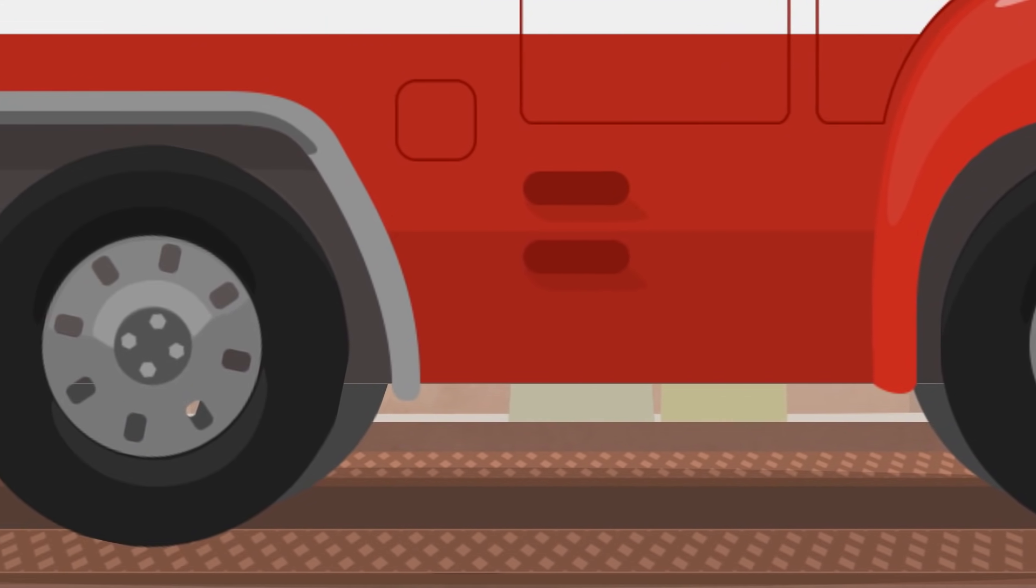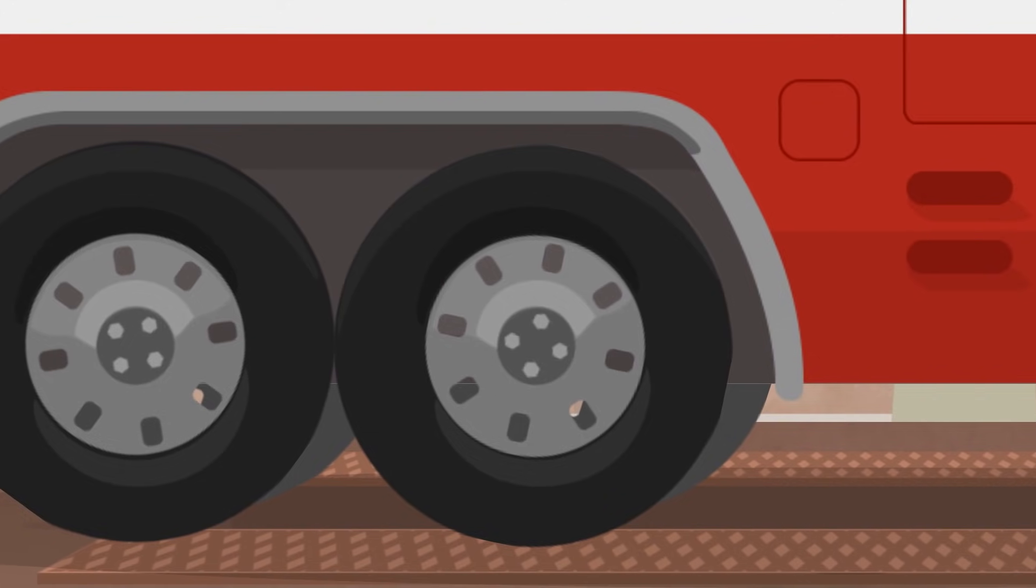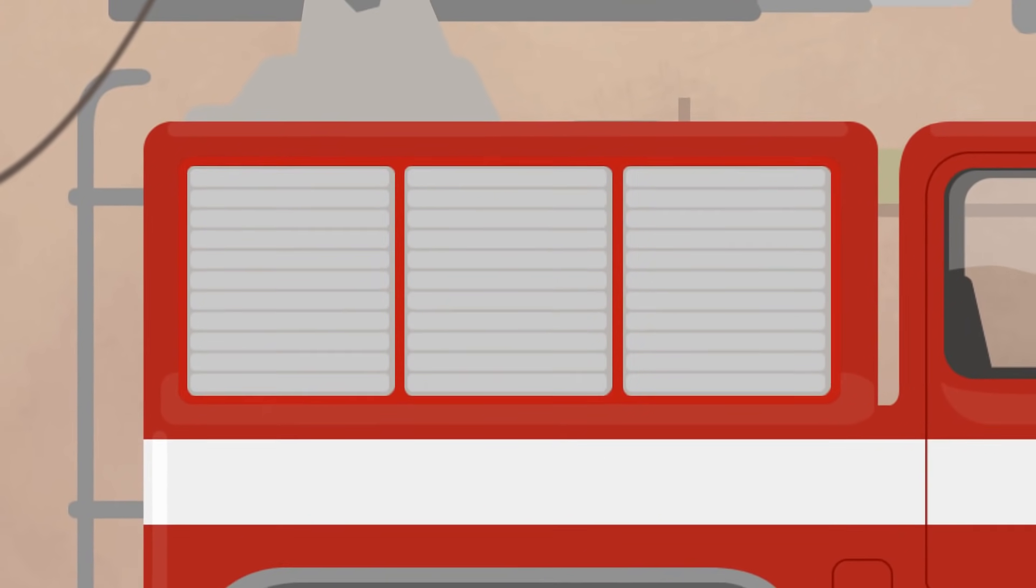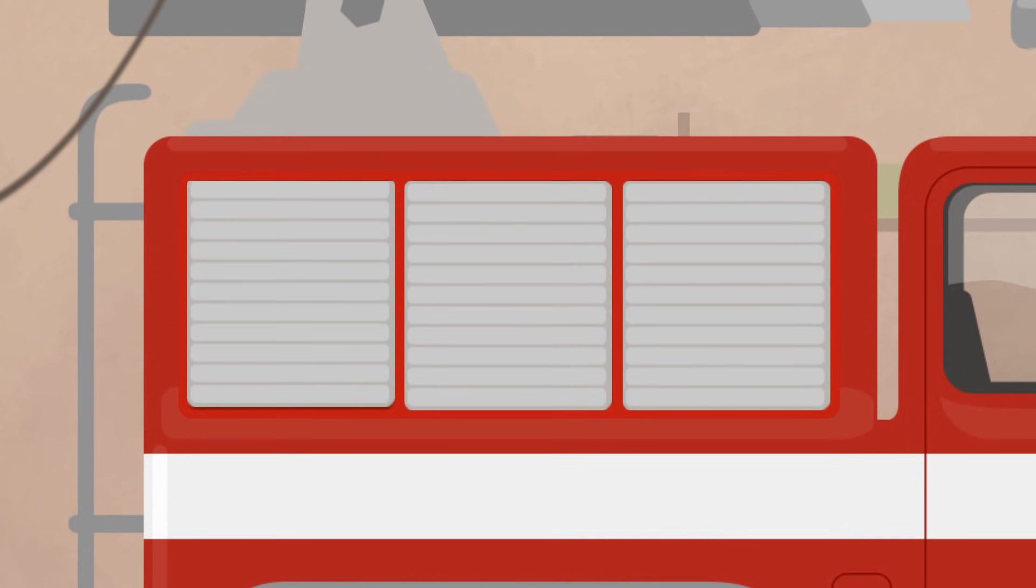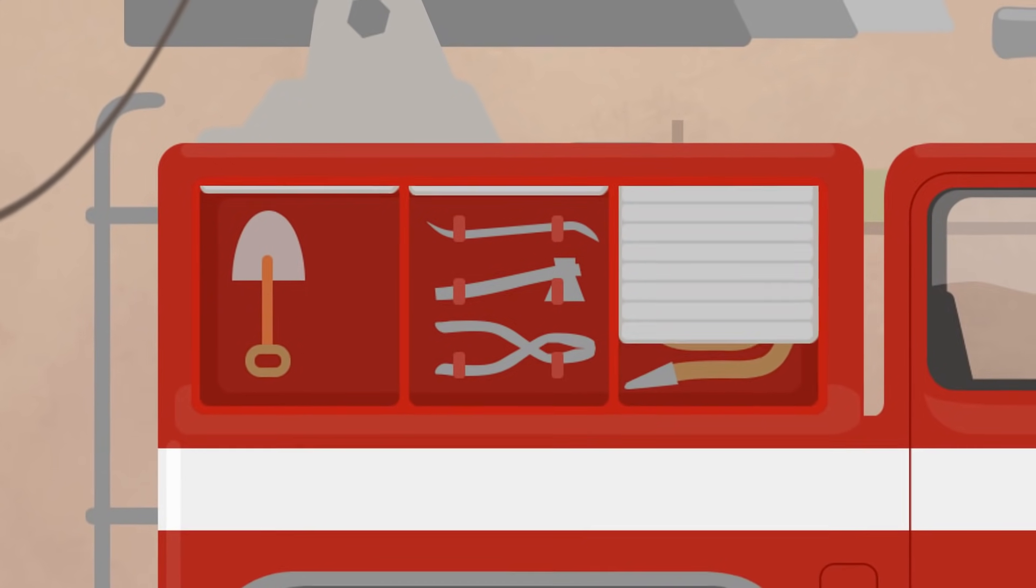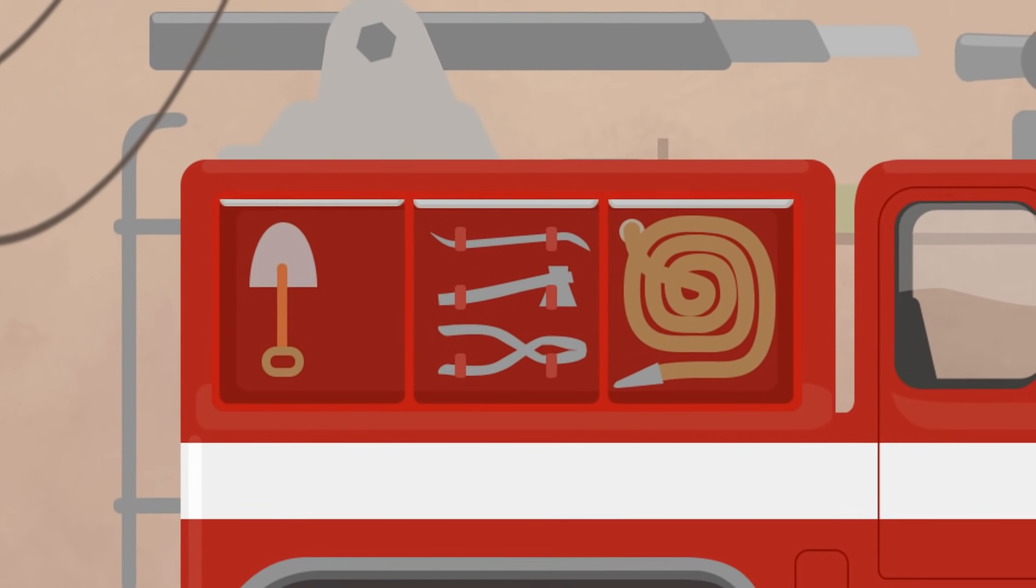Outside there is no damage. Everything looks good. What's in these compartments? Shovels, axes, a crowbar, a water hose. Everything is alright.